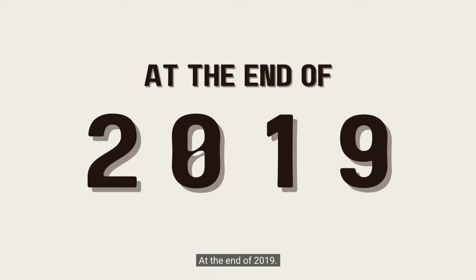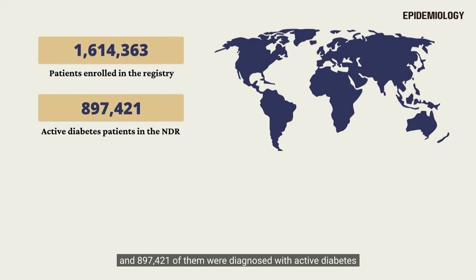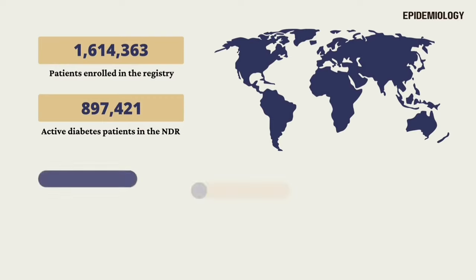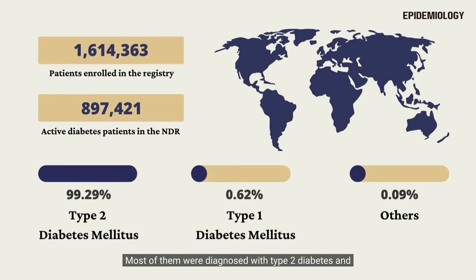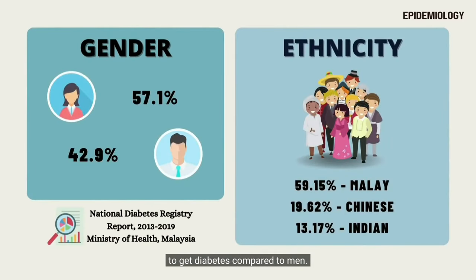At the end of 2019, it is reported that there were a total of 1,614,363 patients registered, and 897,421 of them were diagnosed with active diabetes in the National Diabetes Registry Report. Most of them were diagnosed with type 2 diabetes, and there were 0.62% of patients diagnosed with type 1 diabetes. Based on the data, females are more likely to get diabetes compared to men. In terms of race, Malay has the highest percentage of getting diabetes, followed by Chinese, Indian, and others.